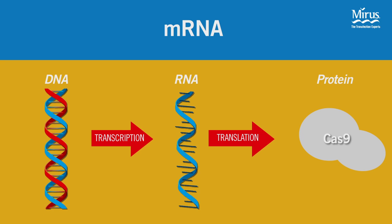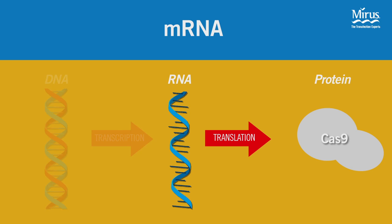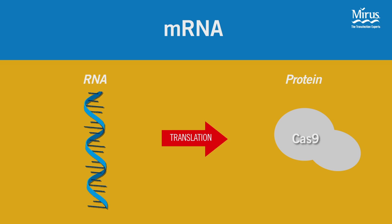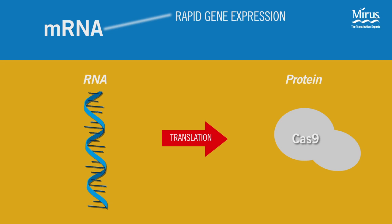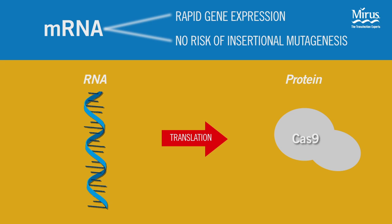Transfection of Cas9 mRNA is another option for researchers whose experiments are not amenable to DNA delivery. mRNA transfection eliminates the incubation time required for cells to transcribe DNA into RNA. In addition to rapid gene expression, a benefit to RNA transfection is that there is no risk of insertional mutagenesis because there is no exogenous DNA introduced to the cell.